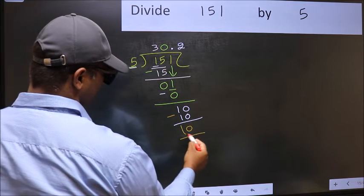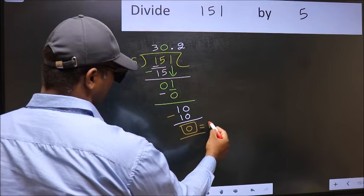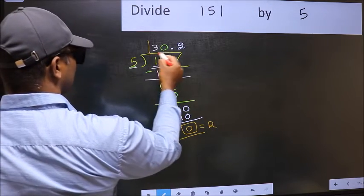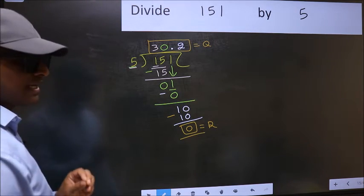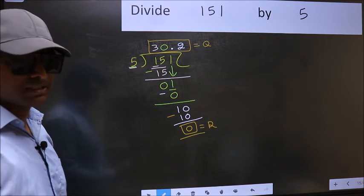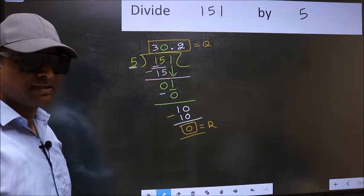So this is our remainder, and this is our quotient. Did you understand where the mistake happens? You should not do that mistake.